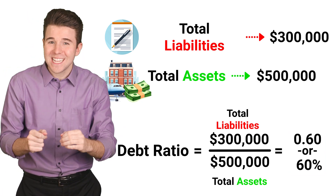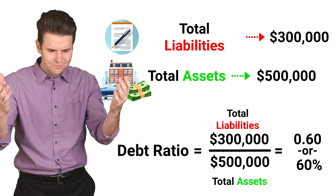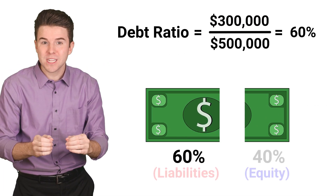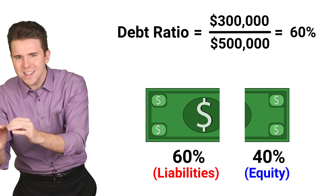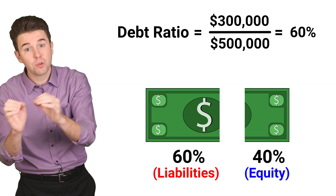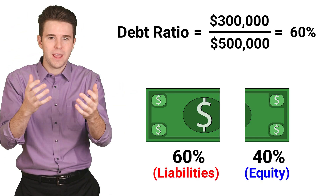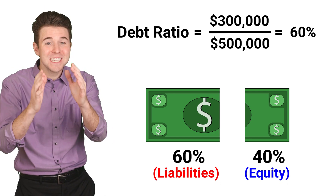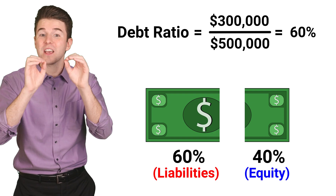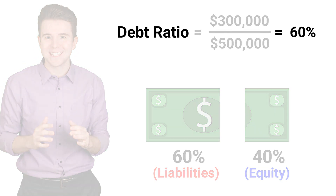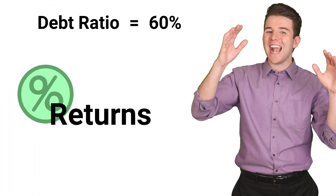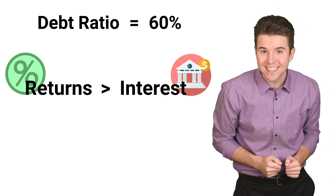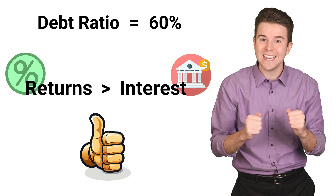But what does a 60% debt ratio actually tell us? Well, it indicates that 60% of assets are funded through liabilities. If a company can generate a higher return than the interest it's paying on its debt, then the leverage is working in its favor.